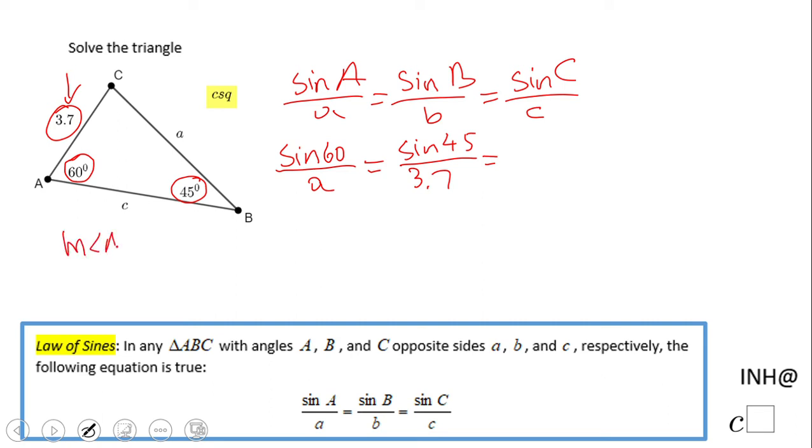We do not know angle C. How can we find it very fast, right? Measure of angle A plus measure of angle B plus measure of angle C, these three angles, right? The sum of the interior angles in the triangle is 180.